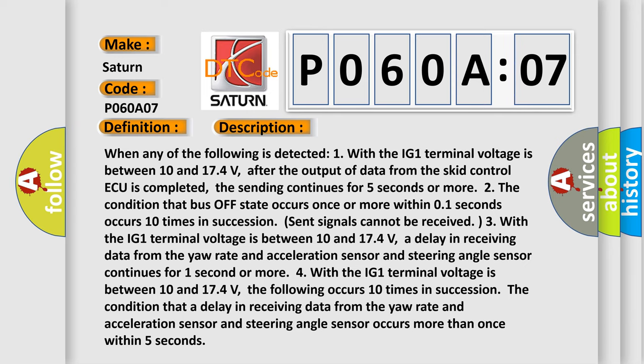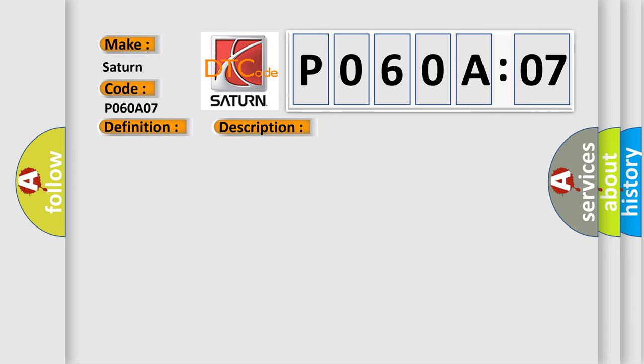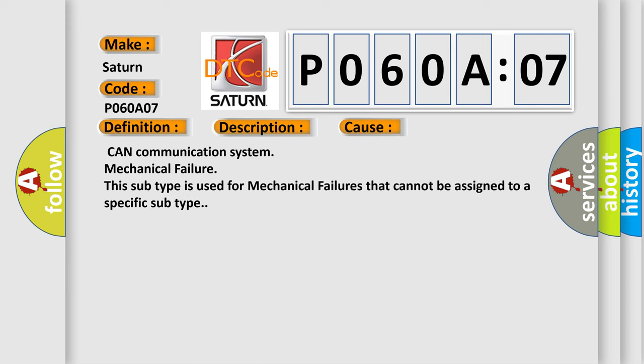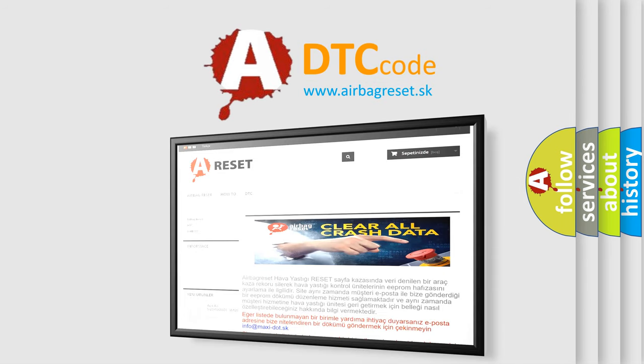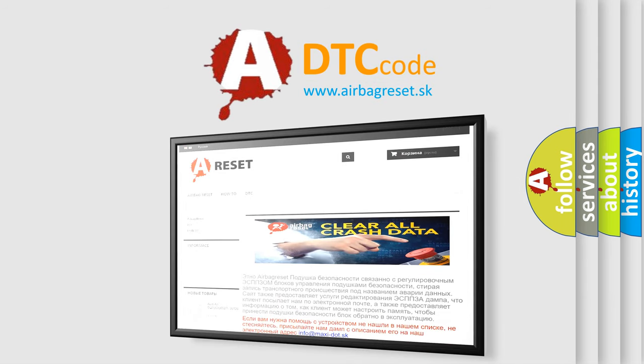This diagnostic error occurs most often in these cases: CAN Communication System Mechanical Failure. This subtype is used for mechanical failures that cannot be assigned to a specific subtype. The Airbag Reset website aims to provide information in 52 languages. Thank you for your attention and stay tuned for the next video.